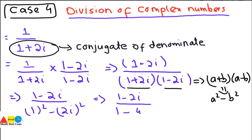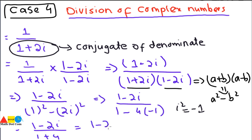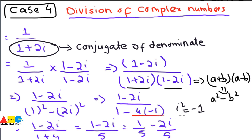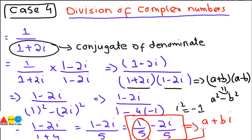Since iota squared equals minus 1, we get 1 minus 4 times (minus 1) equals 1 plus 4 equals 5. So we have (1 minus 2 iota) divided by 5, which can be written as 1/5 minus (2/5)iota. This is now clearly in standard form A plus B iota, where 1/5 is the real part and minus 2/5 is the imaginary coefficient.